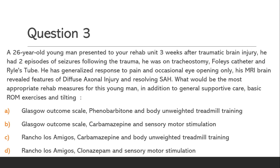Options: Option A: Glasgow Outcome Scale, Phenobarbitone, and Body Unweighted Treadmill Training. Option B: Glasgow Outcome Scale, Carbamazepine, and Sensory Motor Stimulation. Option C: Rancho Los Amigos, Carbamazepine, and Body Unweighted Treadmill Training. Option D: Rancho Los Amigos, Clonazepam, and Sensory Motor Stimulation.